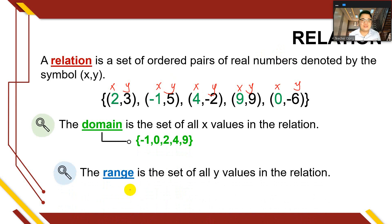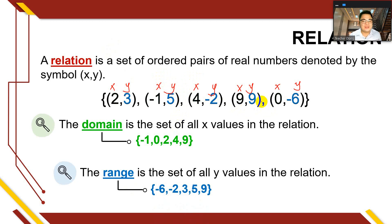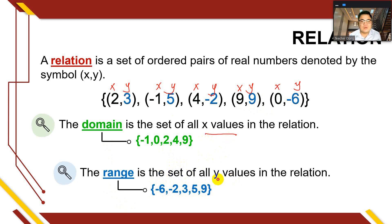When we say range, it's the set of all y-values in a relation. In this set, all the y-values are 3, 5, -2, 9, and -6. If we order them in increasing order, starting with the lowest value: -6, -2, 3, 5, 9. So for every relation, we have a domain (the set of all x-values) and a range (the set of all y-values).